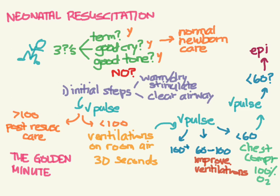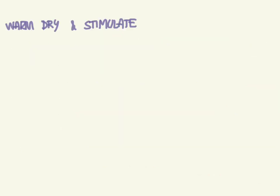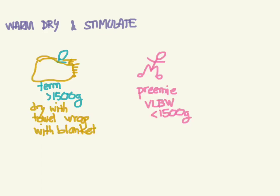Let's go through each of these sections in more detail. Let's start with warming and drying the baby and stimulating, and it really depends on if the baby is full term or not. Term babies or those greater than 1500 grams, you're going to dry them off and then wrap them up in a warm blanket.